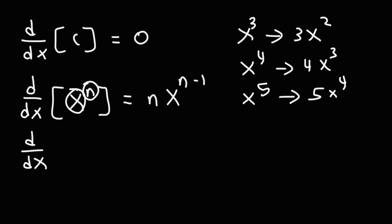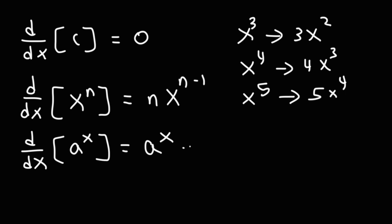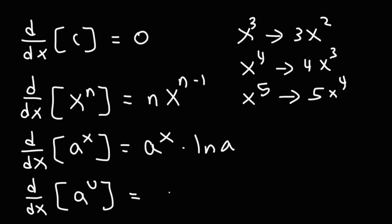Now, instead of having a variable raised to a constant, what if we have a constant raised to a variable? The derivative of a to the x is going to be a to the x times ln a. The reason why we get that is because the derivative of x is 1. But let's say we have the derivative of a to the u, where a is a constant but u is a function of x. This is going to be a to the u times the derivative of u times ln a. Here we would have the derivative of x, but that's just going to be 1.